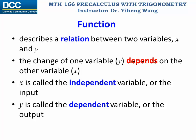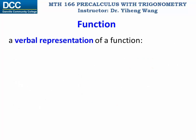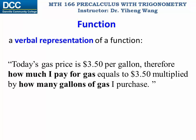Let's look at some examples. A function can be described verbally. For example, here is a sentence: today's gas price is $3.5 per gallon, therefore how much I pay for gas equals $3.5 multiplied by how many gallons of gas I purchase. This sentence clearly describes the relation between two variables — how much I pay for gas depends on how many gallons I purchase. Therefore, this is a function.